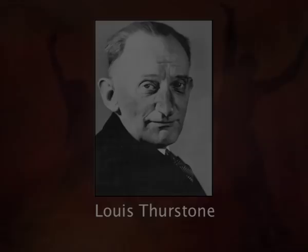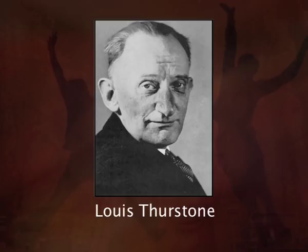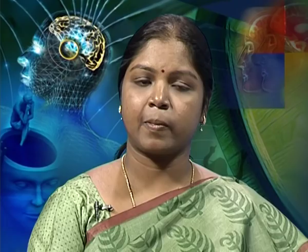Let us first talk about Thurston's scale. Thurston's scale is the first formal technique used to measure attitude. This particular attitude measurement was originally intended to measure attitude towards religion. It is a very old technique — approximately 87 years old — formulated to measure the attitude towards religion. The scale is also popularly known as the equal appearing intervals method, and the construction of this scale is a very complex process.